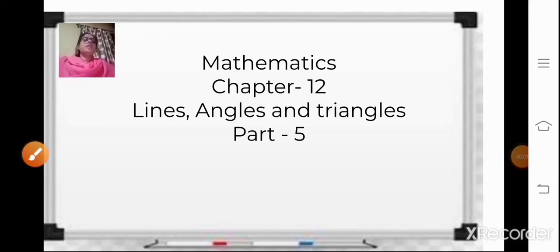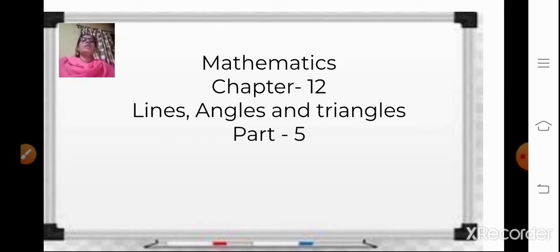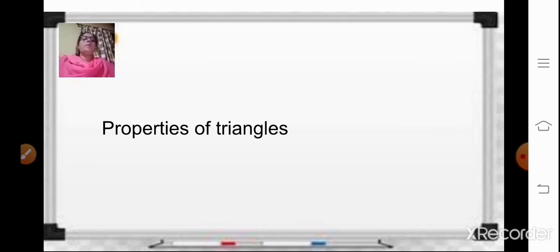Hello Sairam students. In the last class we have already done about the types of triangles, which were categorized on the basis of sides and angles. Today we will be doing the last topic of this chapter. In part 5, we will be doing about the properties of triangles.